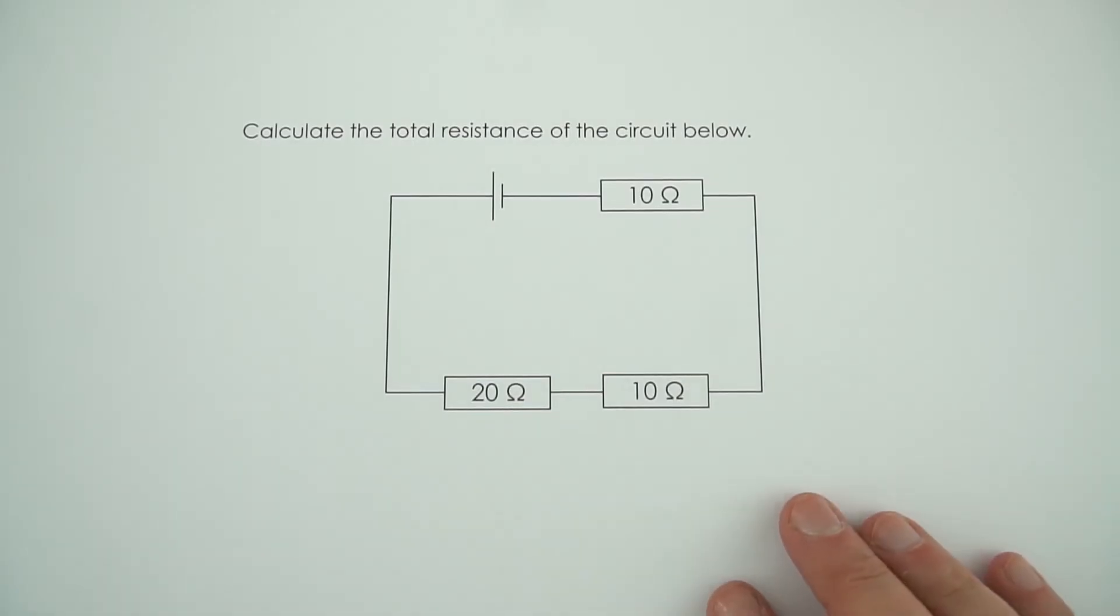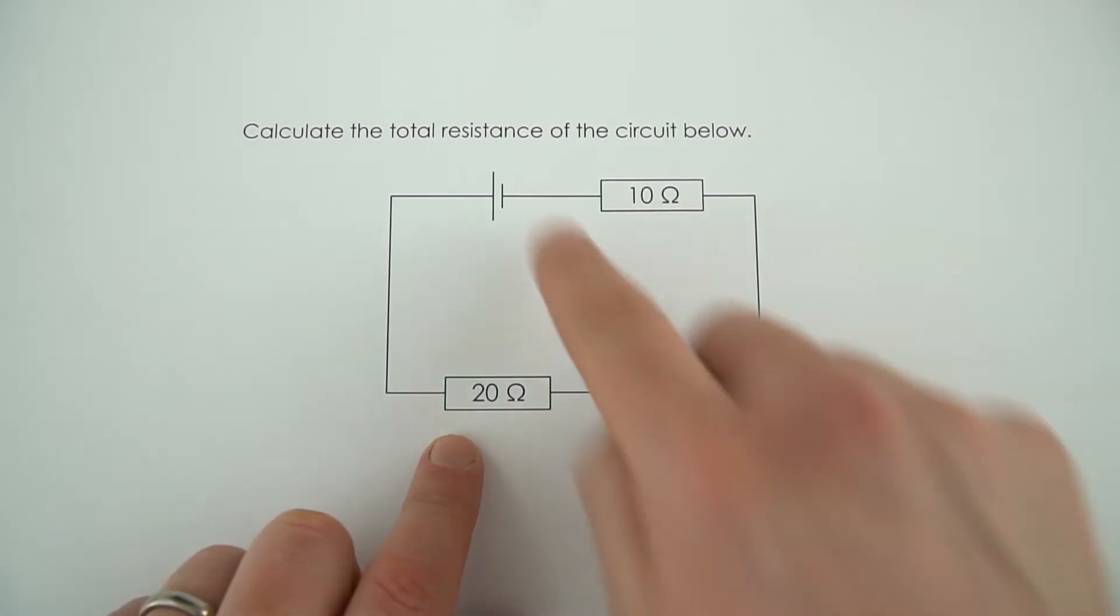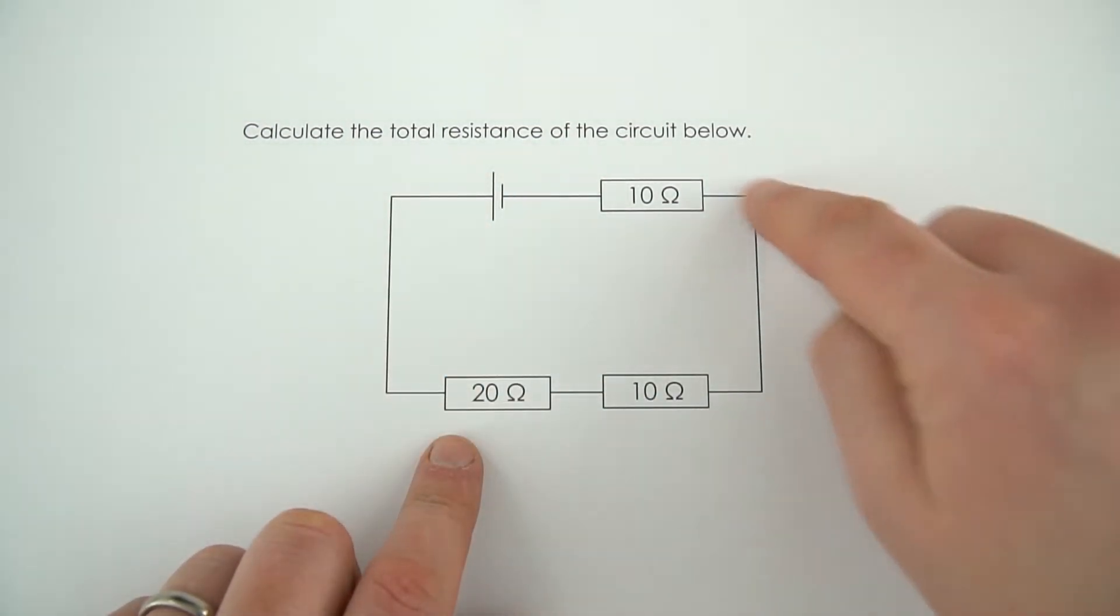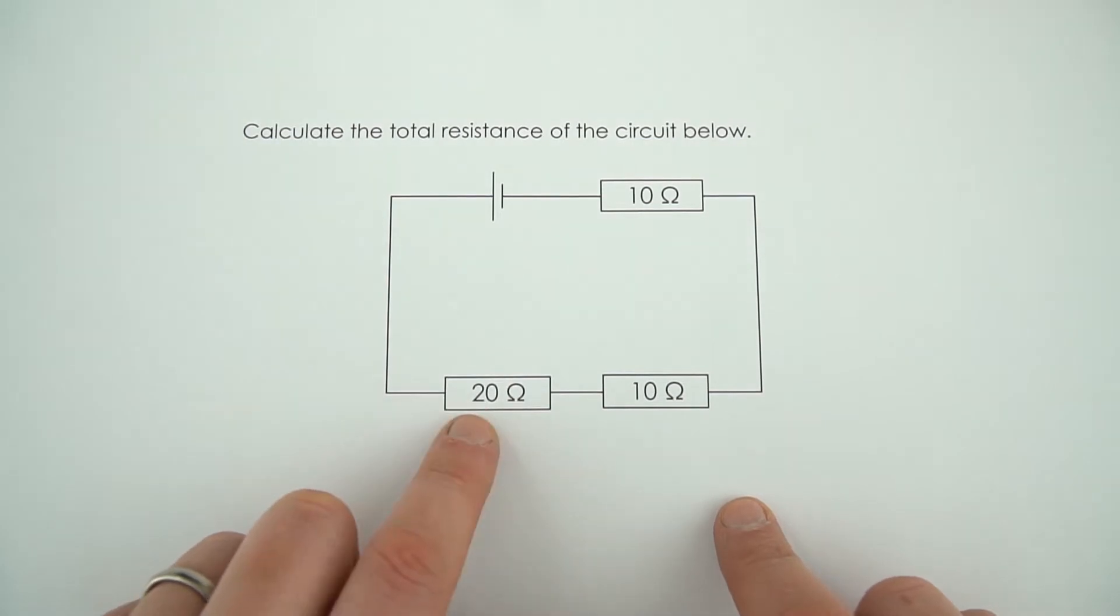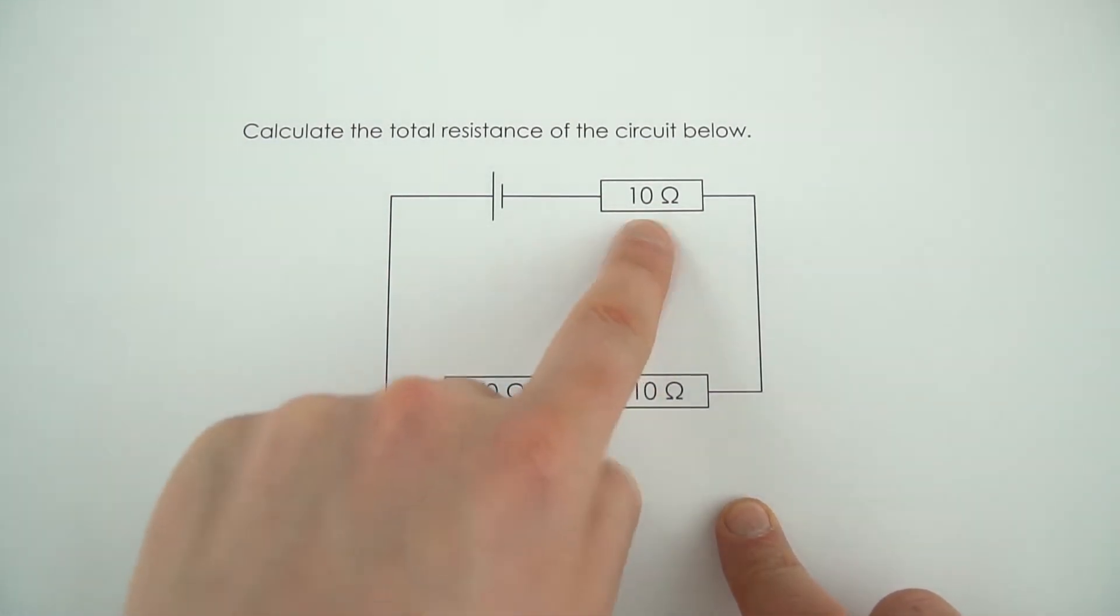In this circuit I need to calculate the total resistance. It's a series circuit with three resistors in it. We've got a 20 ohm, a 10 ohm and a 10 ohm.